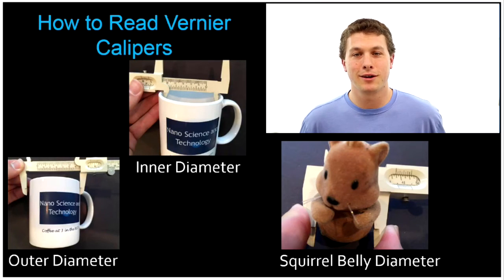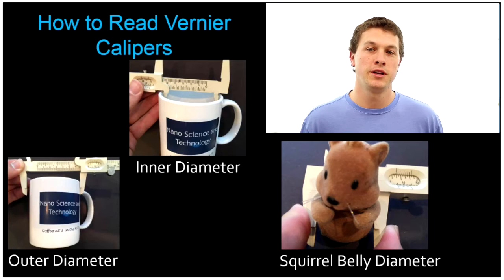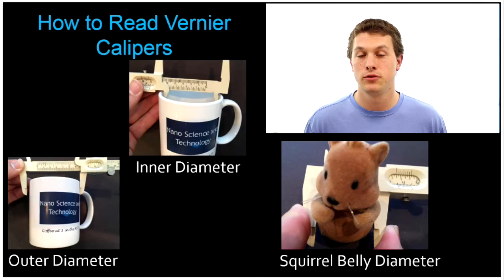Welcome to Real Chemistry. I'm Dr. Morris. Today on the show, we're going to read vernier calipers. Vernier calipers are pretty nifty because you can read things to a very high precision, namely distances.